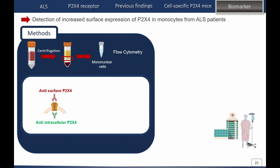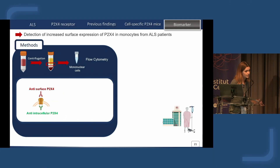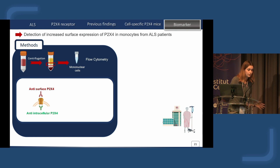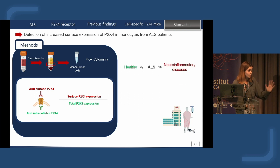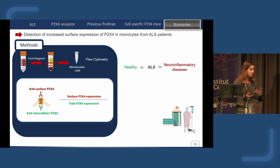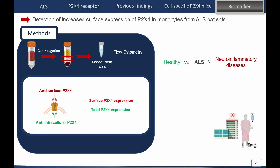We optimized a new protocol where we take blood samples from patients and, by centrifugation, collect the mononuclear fractions — specifically the monocytes, which are the precursors of macrophages. With this sample, we perform flow cytometry with two antibodies: one staining the surface and another staining the intracellular part, and we compute a ratio. To know if P2X4 could be a biomarker, we need to study differences between healthy patients, ALS patients, and — importantly — patients with other neuroinflammatory diseases.